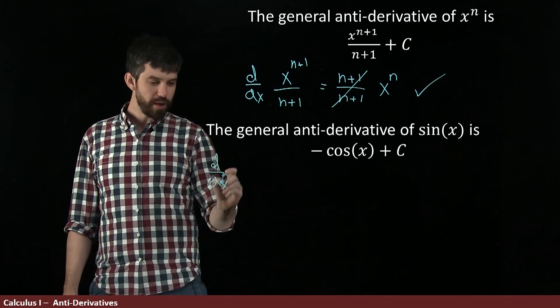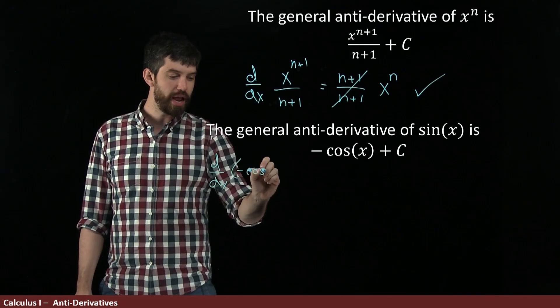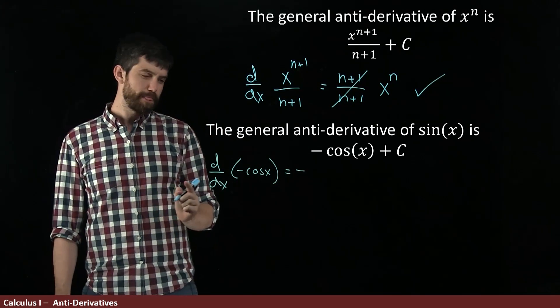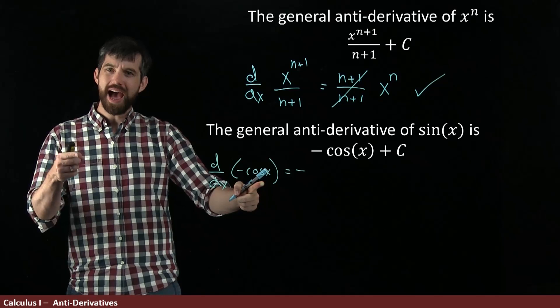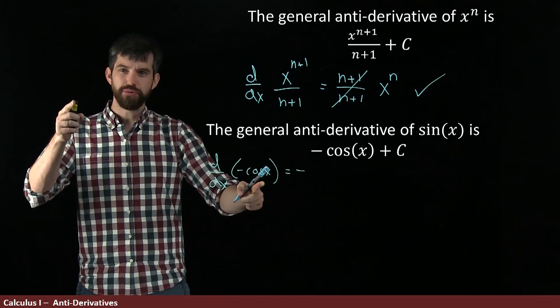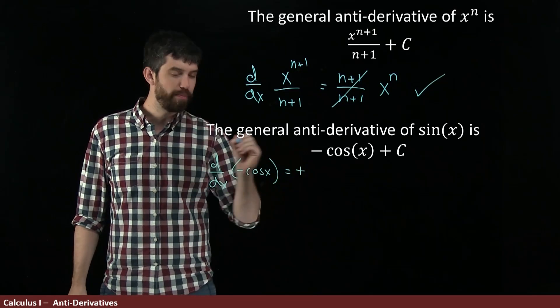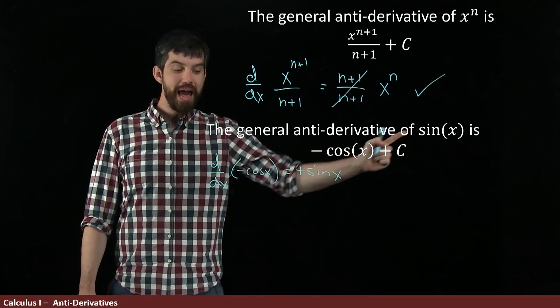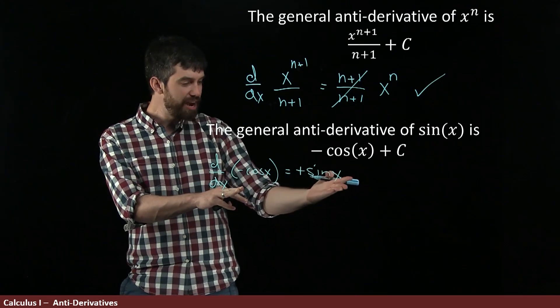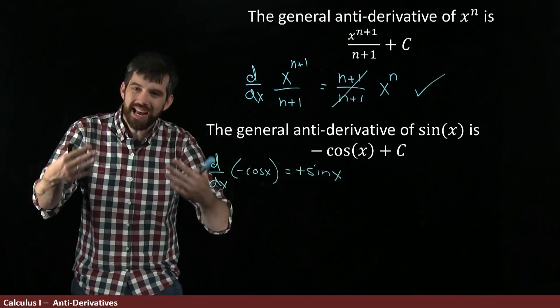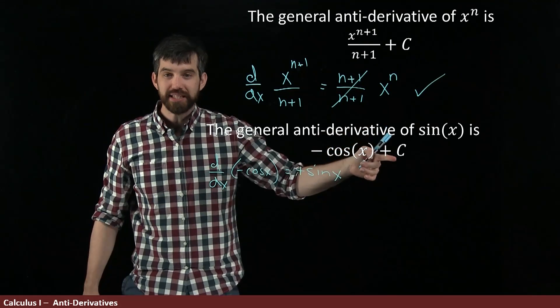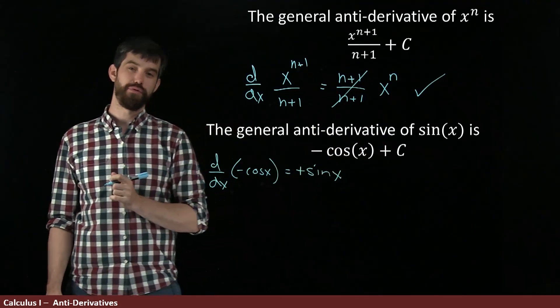So I'm taking the derivative now of minus cos of x. Well, this minus sign comes out the front. And then when I take the derivative of cosine, I know what that is. It's minus sine. So two minuses, this minus is now going to become a plus, plus sine of x. And indeed, that's what we have. So the derivative of minus cos of x is sine of x. That tells me the antiderivative of sine of x is minus cos of x plus this value of c in the general form.